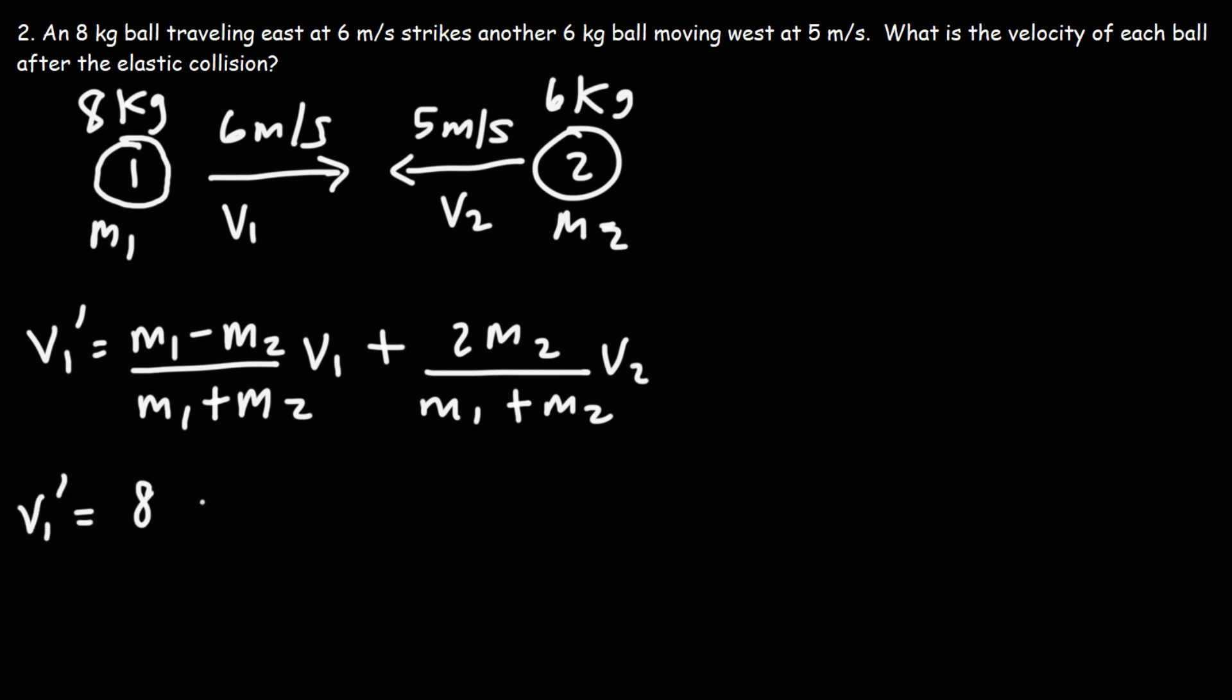So M1 is 8, M2 is 6. And then we're going to divide that by the sum. V1 is 6, M2 is 6. The sum is going to be the same. And V2, V2 is negative 5, not positive 5, because V is velocity, and we need to incorporate direction. Because it's moving west, we need to plug in negative 5.